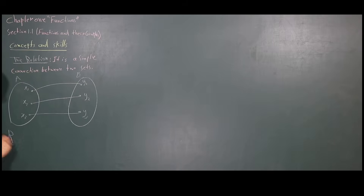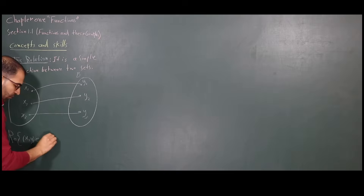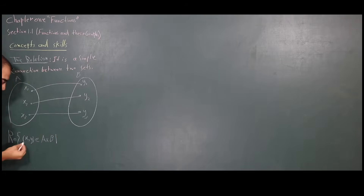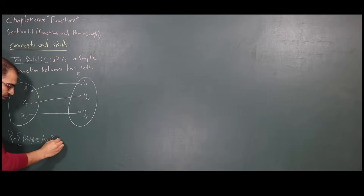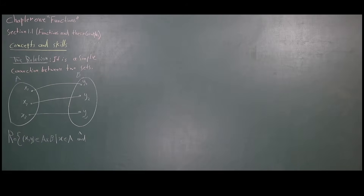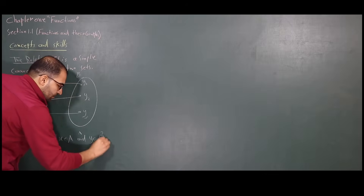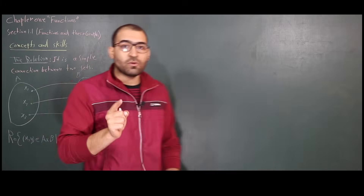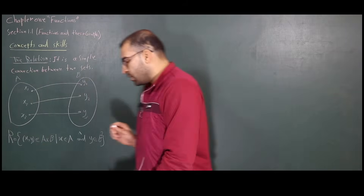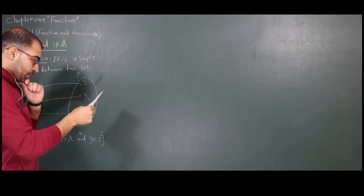The relation is a set of ordered pairs — (x, y) belonging to the Cartesian product of the two sets — such that the first element of the ordered pair belongs to set A, and y belongs to the other set. It is just a simple connection; it could be with a rule or without a rule.